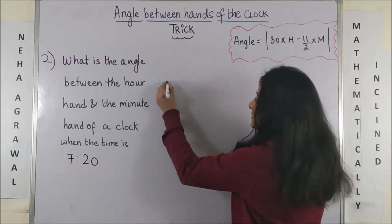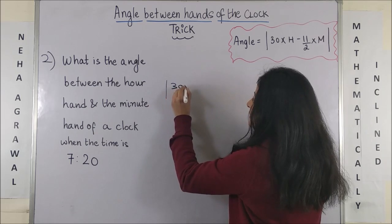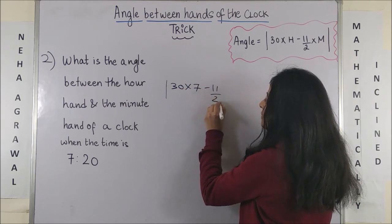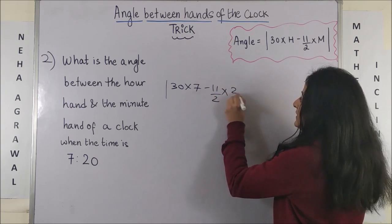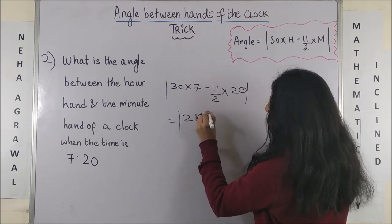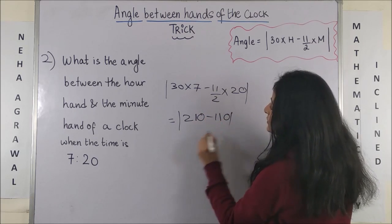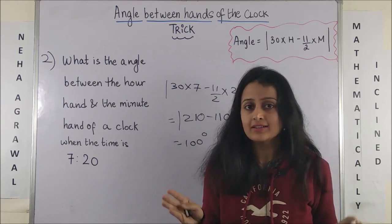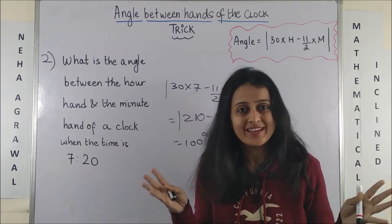So again, applying the same formula, this is 30 into 7 minus 11 by 2 into 20. So this is 210 minus 110. So the answer is simply 100 degrees is the angle made by them. Wasn't this so quick?